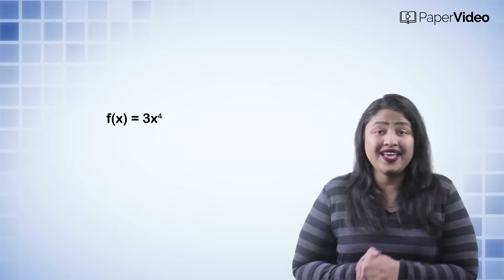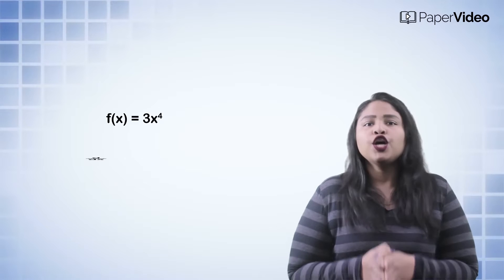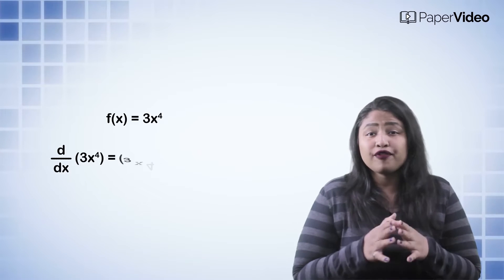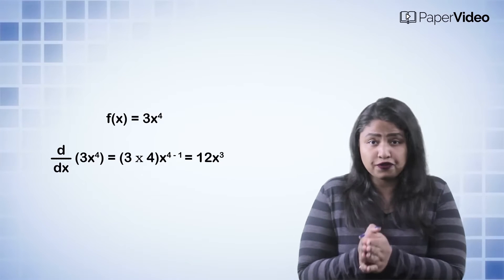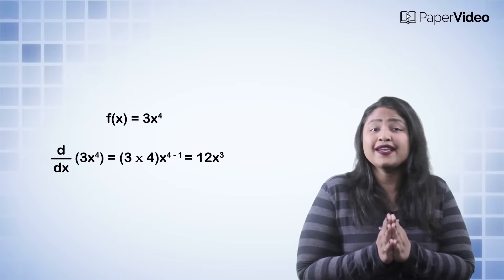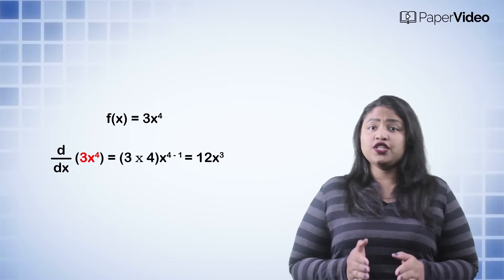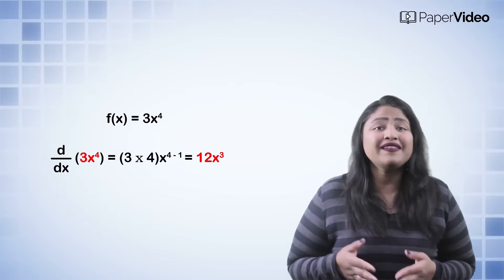Let us understand this formula with the help of an example. Suppose we want to find the derivative of the function f of x equals to 3x raised to 4. Using the standard formula, we can write the derivative of 3x raised to 4 as 3 into 4x raised to 4-1, equals to 12x cube. Therefore, the derivative of 3x raised to 4 is 12x cube.